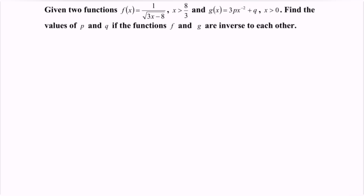Given the two functions: f(x) is equal to 1 over square root of 3x minus 8, where x must be greater than 8 over 3. The second function, g(x) is equal to 3p multiplied with x to the power of negative 2 plus q, where x must be greater than 0.